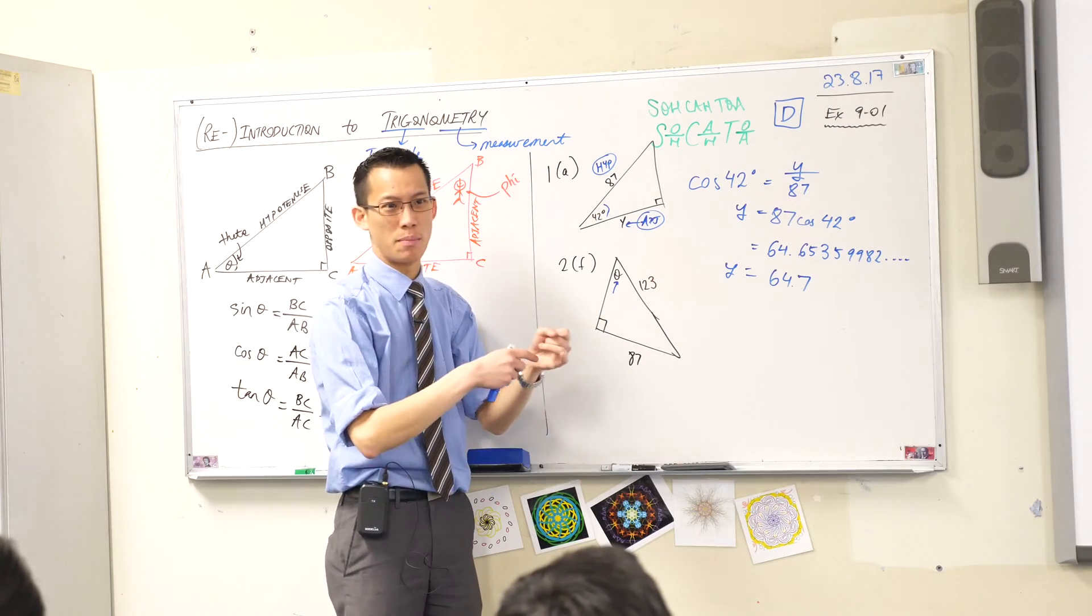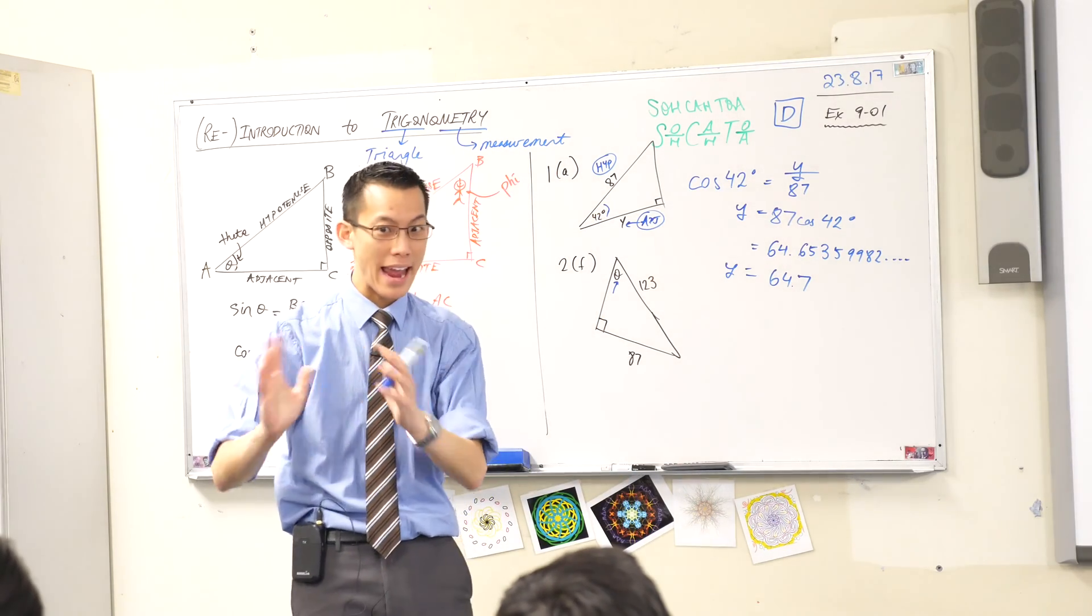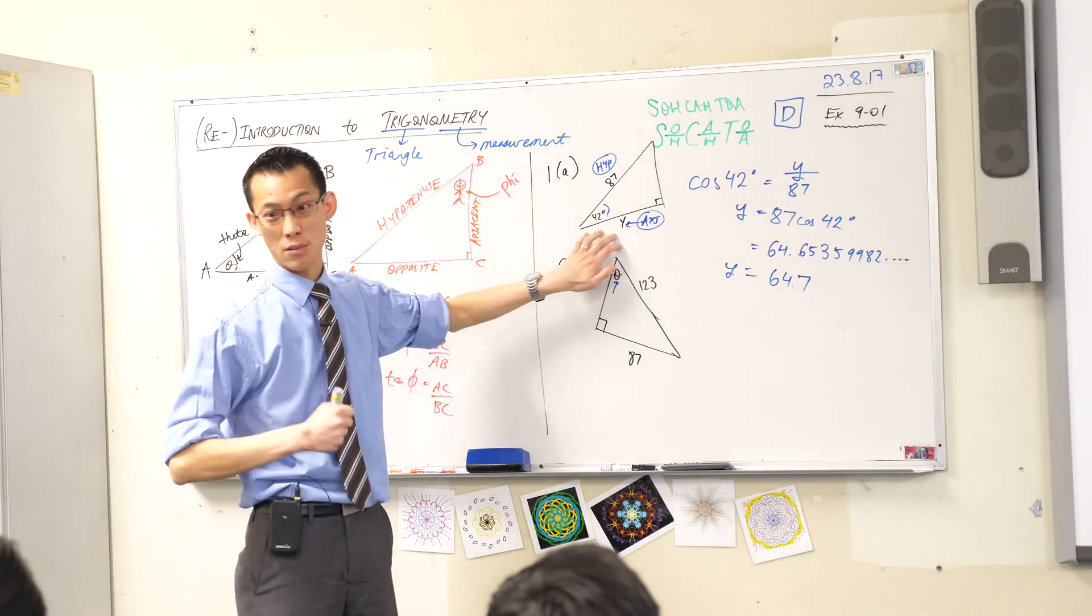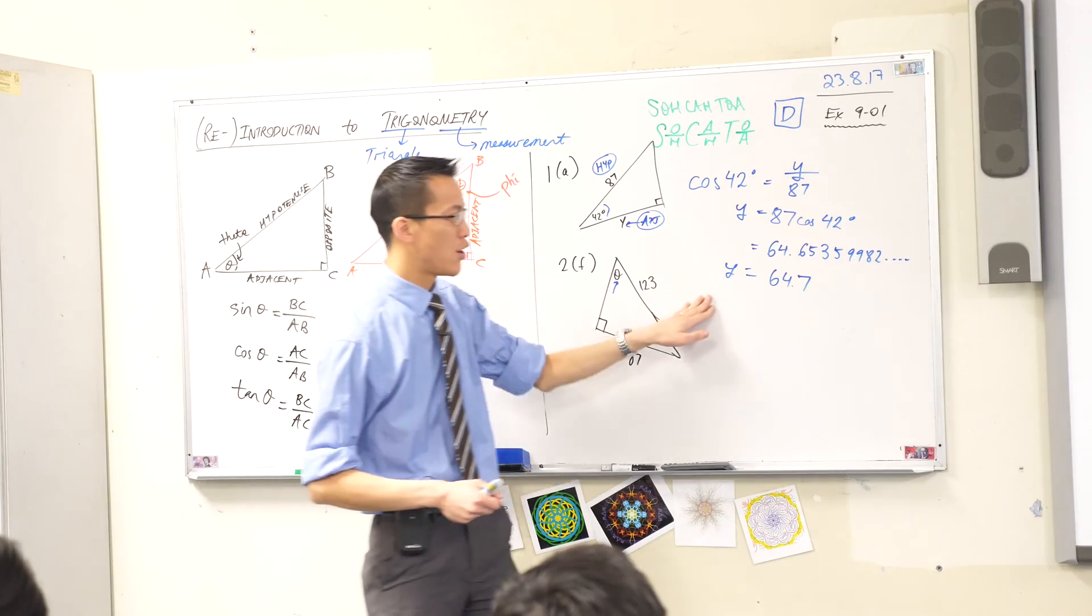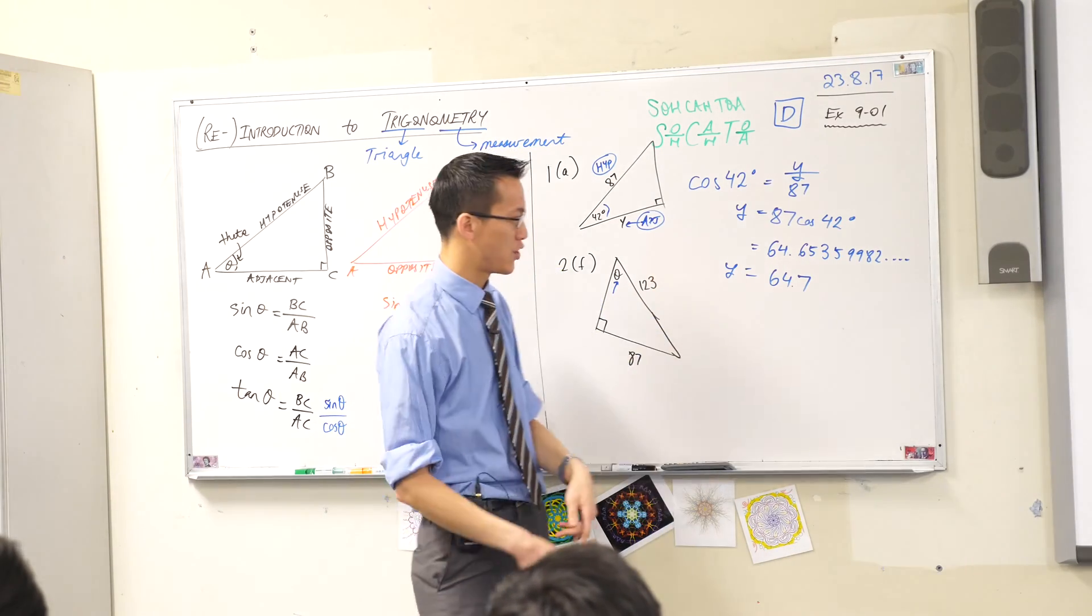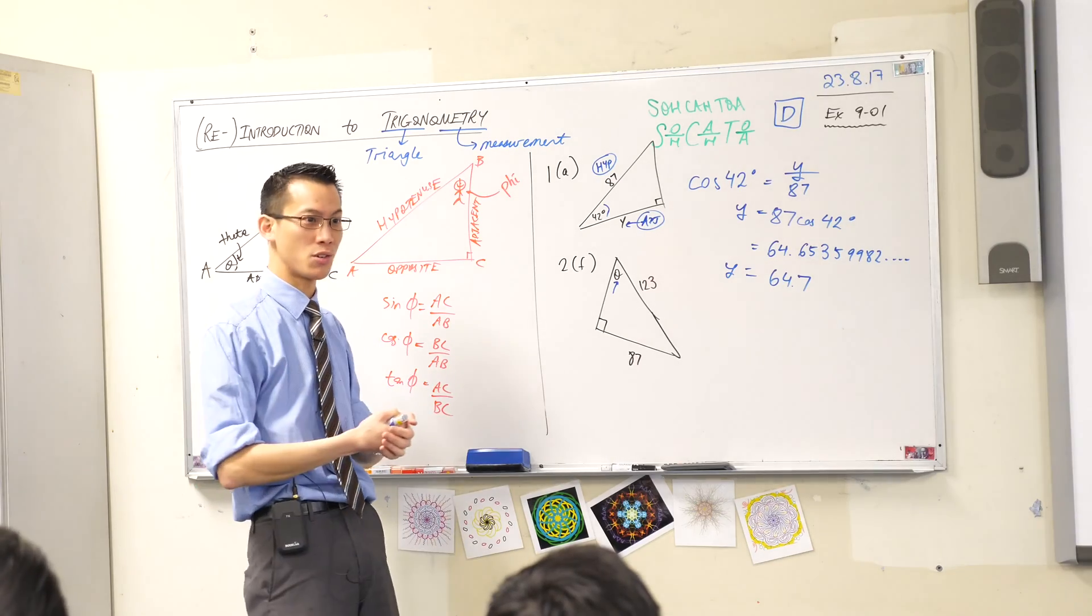So in fact, if this was say 87 kilometers rather than centimeters, this would be 64.7 kilometers rather than centimeters. And it doesn't matter how big. It could be inches, it could be nanometers, it could be anything. Trigonometry works regardless of size. That's one of the special things about it. So that is the measurement.